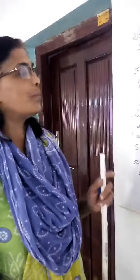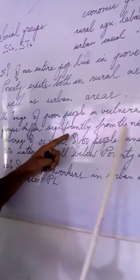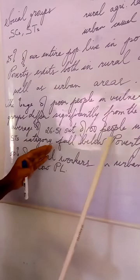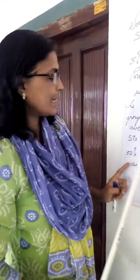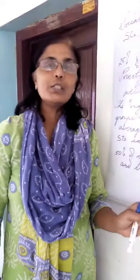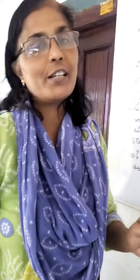If a question comes regarding the statistics about poverty, you should say that the percentage of poor people among the vulnerable groups differs significantly from the national average. The national average is 26.51 — out of 100 people among the social groups, that is the Scheduled Caste category, they fall below the poverty line. And 50% of the casual labour workers in our urban areas are also below the poverty line.